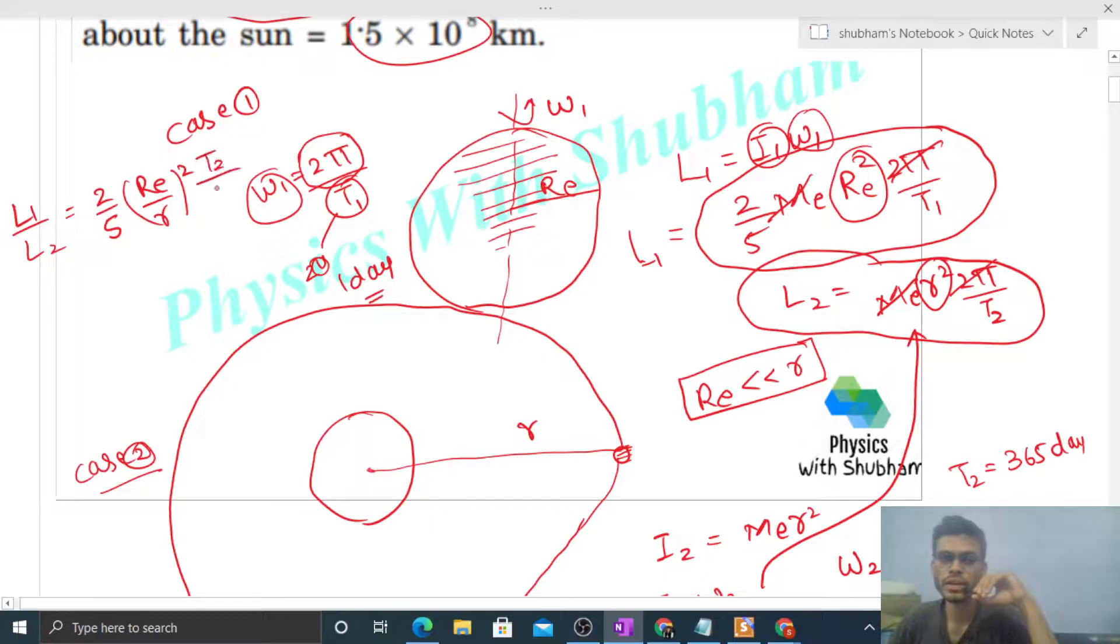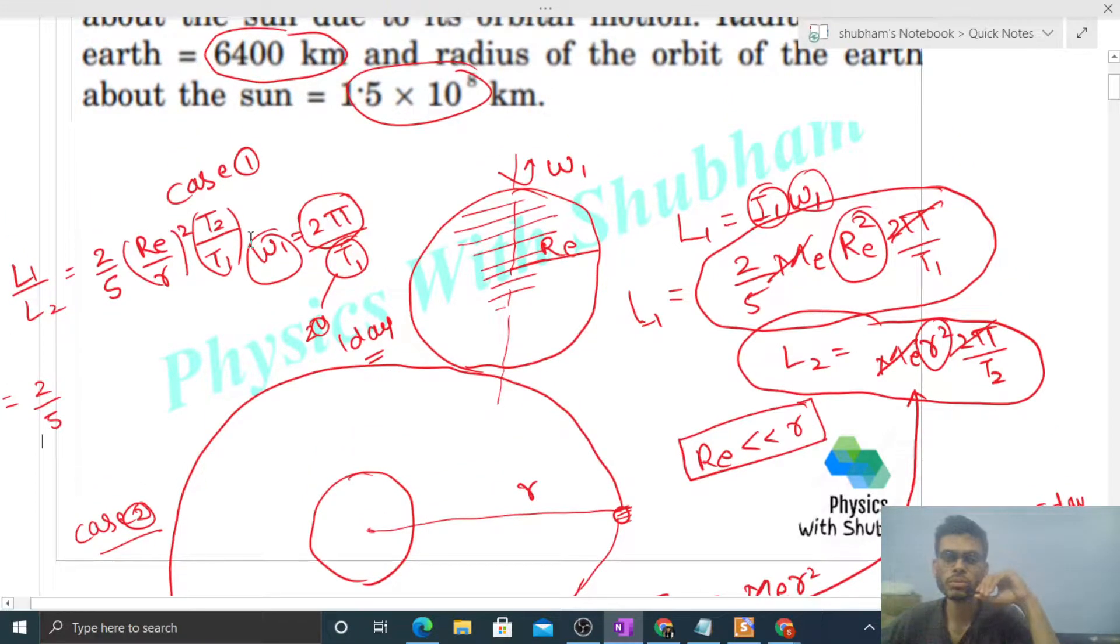Let me put the values: 2 by 5 into radius of Earth is given, 6400 km. So for the ratio, 6400 upon 1.5 into 10 raise to the power 8, that's the orbital radius. Take its square. And T2 is 365 days divided by 1 day. This way you can calculate this value. This will be your answer.